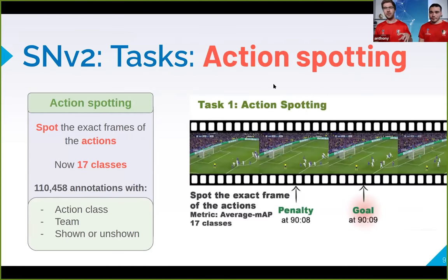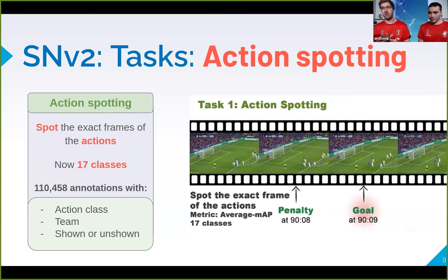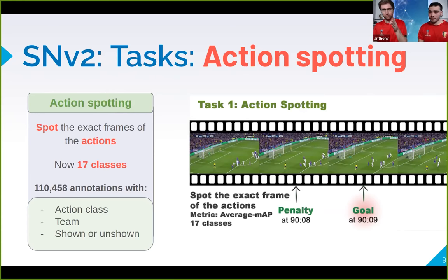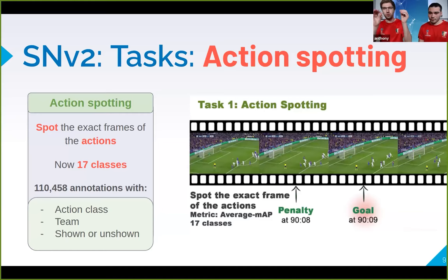Action spotting is about identifying at which frame an action occurs. For example, if there is a penalty, you have to say 'on this frame, the penalty is shot.' The annotation is a single timestamp — most frames are unannotated, and only one frame per action (the moment the player shoots) is annotated. You have to retrieve the exact frame of each action, such as the shot of a penalty and then the shot of a goal.